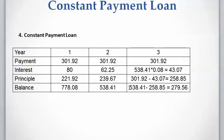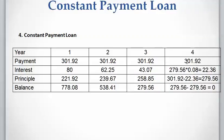For Year 4, the payment is constant and the interest is the remaining balance multiplied by 8%, giving $22.36. The principal is $302 − $22.36 = $279.56. If all calculations are done correctly, this principal for the last year should exactly match the remaining balance, leaving a zero balance at Year 4 after the final payment.